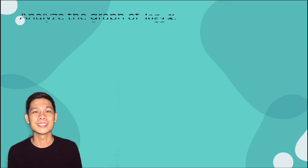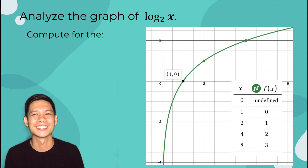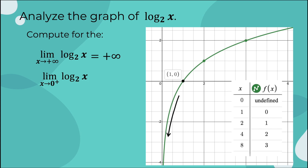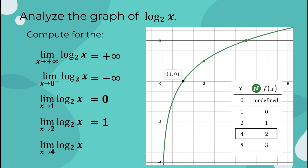Let us look at the graph of y = log base 2 of x and compute for the following limits. The limit as x approaches positive infinity is equal to positive infinity. The limit as x approaches 0 from the right is equal to negative infinity. The limit as x approaches 1 is equal to 0. The limit as x approaches 2 is equal to 1. And the limit as x approaches 4 is equal to 2.